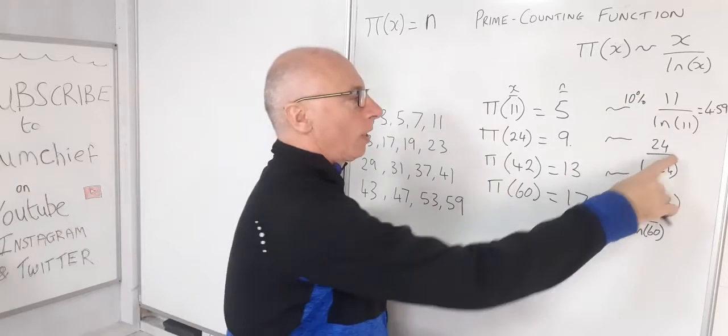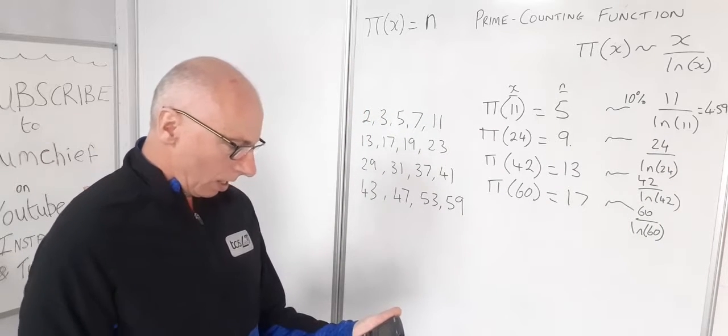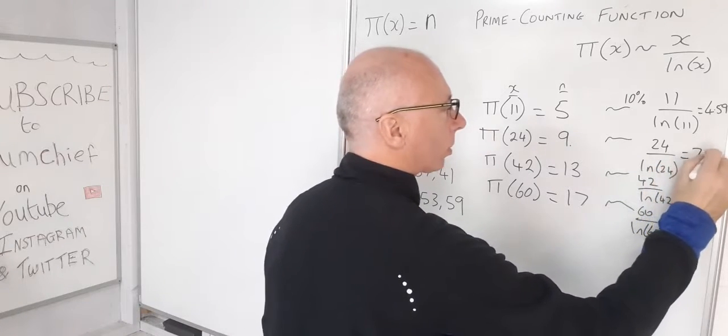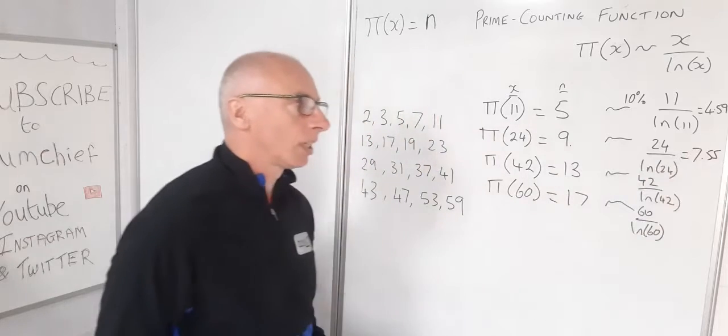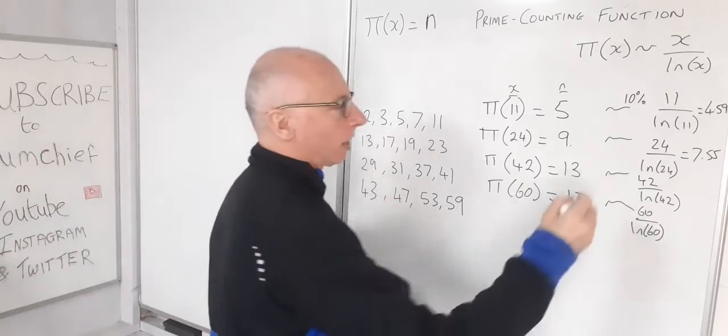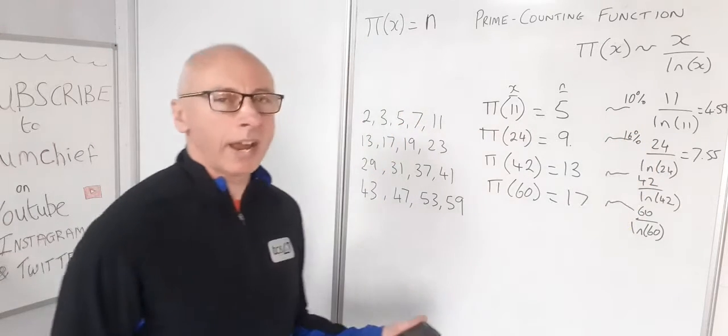This one here, 24 over log of 24, that's giving me 7.55. So this one not quite as accurate. That's 1.5 out, so that's something like 16 percent roughly of what we'll call an error value.